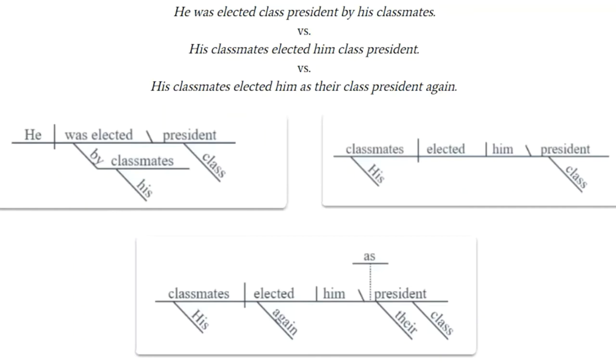Here's another set of sentences to compare. Look at object complements. He was elected class president by his classmates. He, subject, was elected, verb, president is the predicate noun. You'll see that president followed the linking verb. President points back to he. President tells us something about the subject.